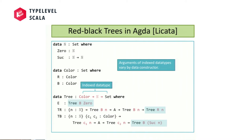This helps capture the constraint that a red node must have black children — the TR constructor requires black trees on both left and right, so giving it a red child produces a type error. The other index, the natural number, tracks the black height: the empty tree has height zero; a red node preserves the same black height since it's not a black node; a black node increments the black height by one. We're using dependent types here — the types of arguments depend on earlier parameters to the data constructor.